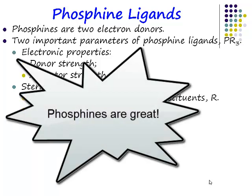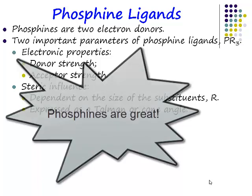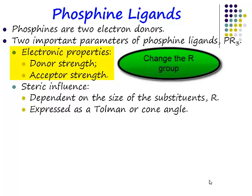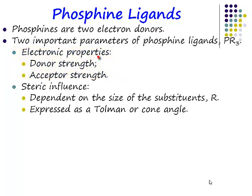Why do organometallic chemists love phosphine ligands so much? Because of their almost infinite variability and flexibility. If you have a phosphine ligand you can play all sorts of games with it. You can vary its electronic properties — how do you do this? You change the R group. You can vary its electronic properties: you can make it a stronger donor, or you can make it a better acceptor.